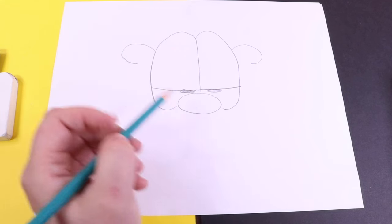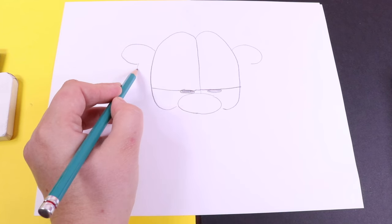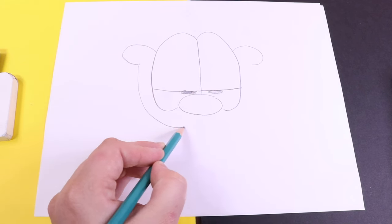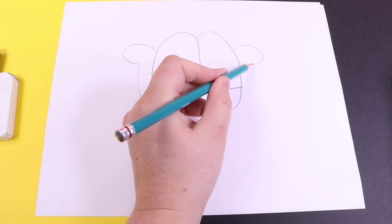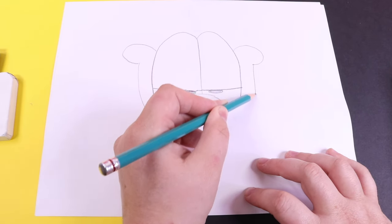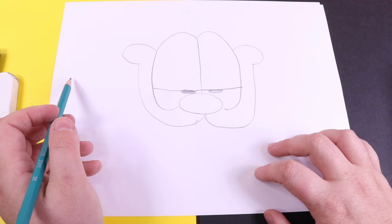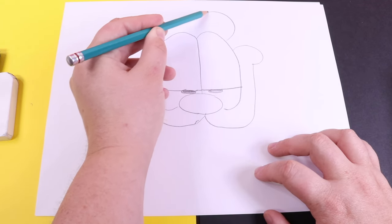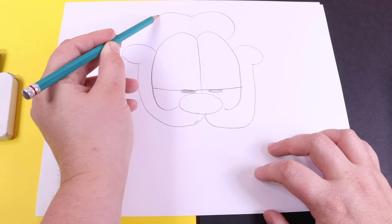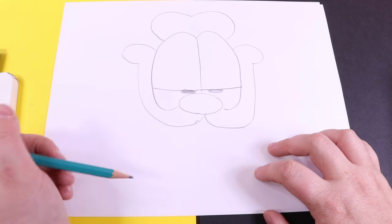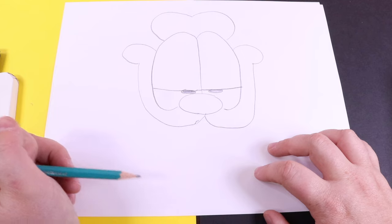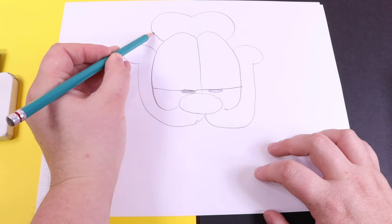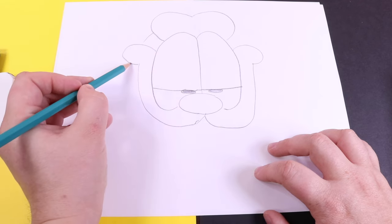On the top of his head, we're going to draw just a little shape to get his ear started, and then from the ear all the way around, we're going to draw his face.